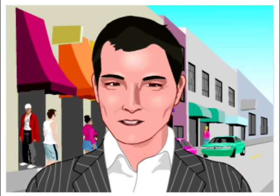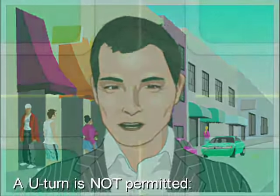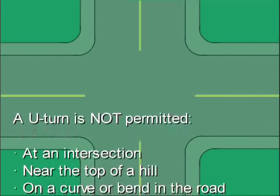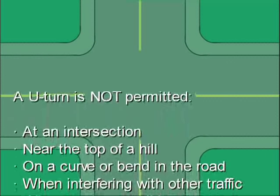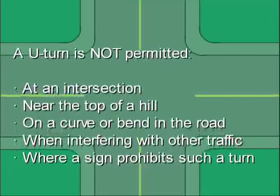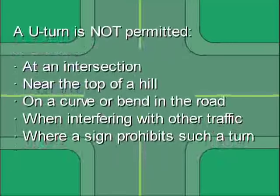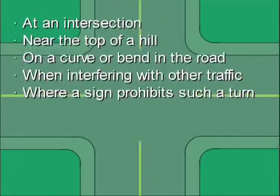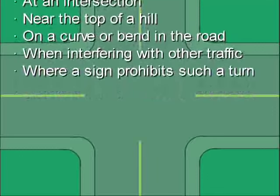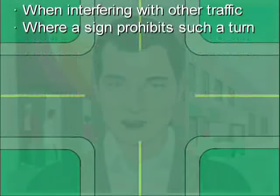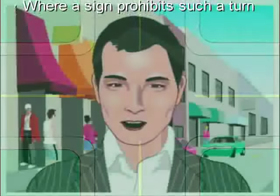A U-turn is not permitted under these conditions: at an intersection, near the top of a hill, on a curve or bend in the road, when interfering with other traffic, and where a sign prohibits such a turn.